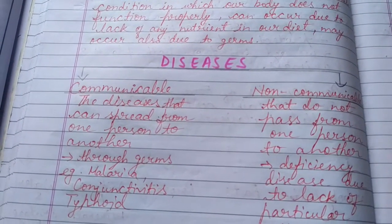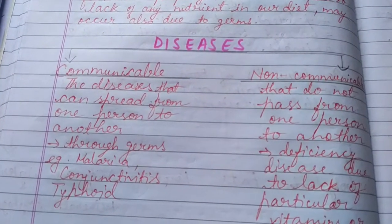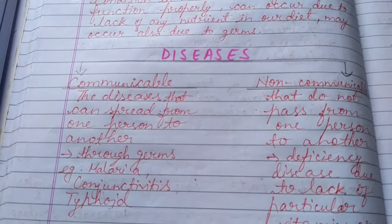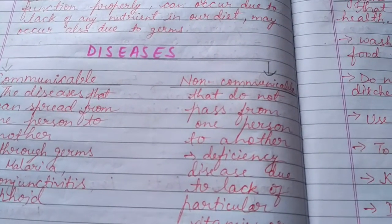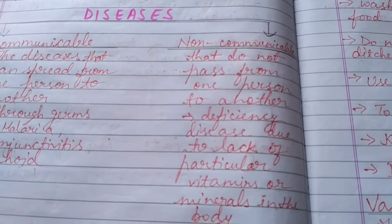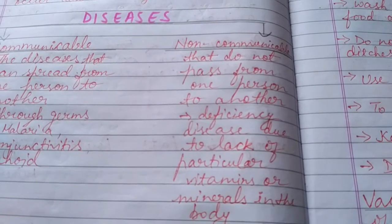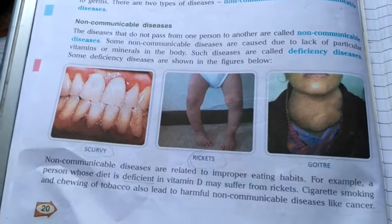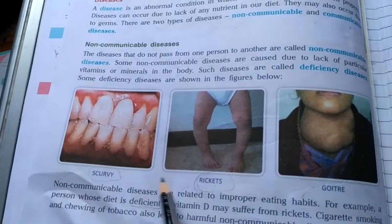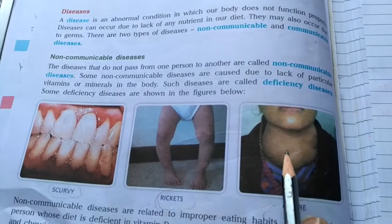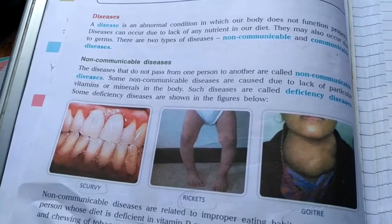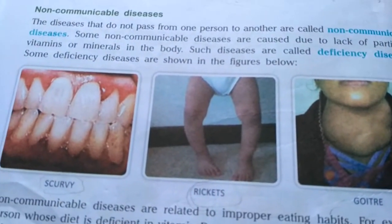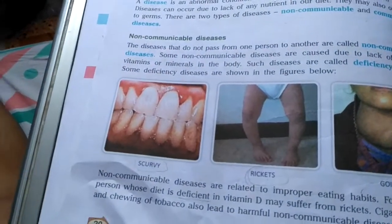Diseases are categorized into two parts: communicable and non-communicable. Communicable diseases spread from one person to another through germs — examples include malaria, conjunctivitis, and typhoid. Non-communicable diseases do not pass from person to person; they are caused by deficiency of vitamins or minerals — examples are scurvy and rickets. Goiter is caused by deficiency of iodine with swelling of a neck gland; rickets by deficiency of vitamin D causing bow-shaped legs; and scurvy by deficiency of vitamin C.